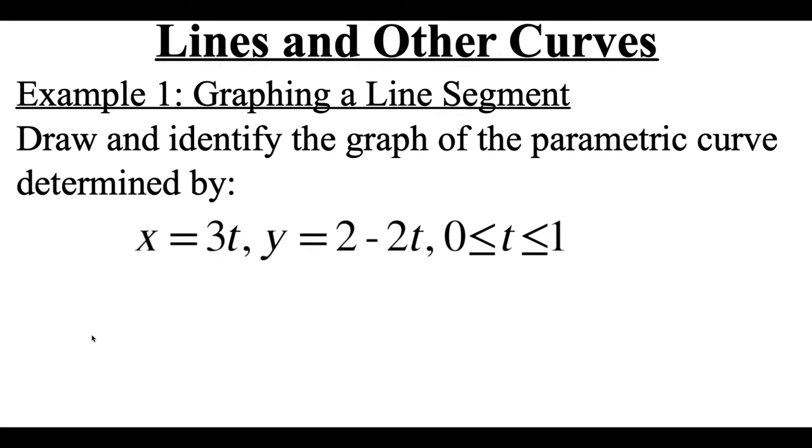So if we look at this first example we're going to graph out a line segment and it says that we're going to draw and identify the graph of the parametric curve determined by x equals 3t and y equals 2 minus 2t for t values between 0 and 1.